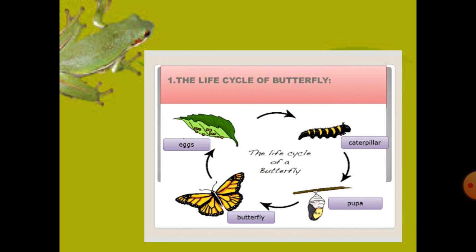Now, the life cycle of a butterfly. There are four stages: first, the butterfly lays eggs; then the caterpillar comes out from the egg; the caterpillar changes into a pupa; and the pupa changes into a butterfly. This is how a butterfly makes copies of itself.